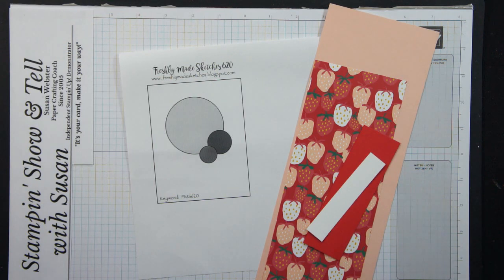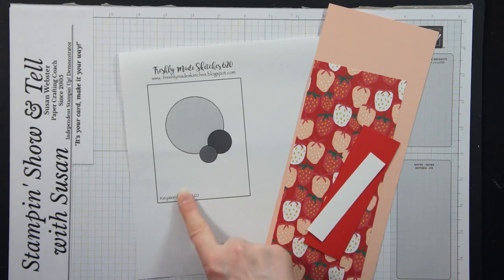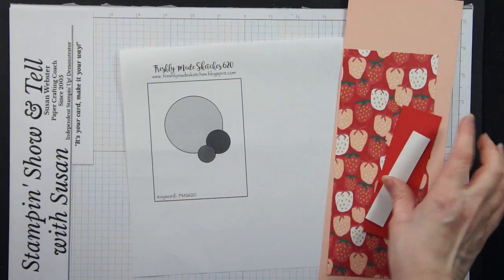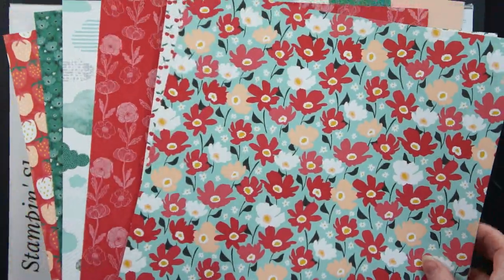I have a Stampin' Show and Tell for you today and we're going to be using some of the celebration papers that you can pick up during the celebration promotion in January and February of this year. So I'm going to be making a card from the sketch from Freshly Made Sketches. You know I like to play with their sketches so I'm going to do that and this is the papers I'm going to use but before I jump right into that I just want to show you the full set of papers that are in this package.